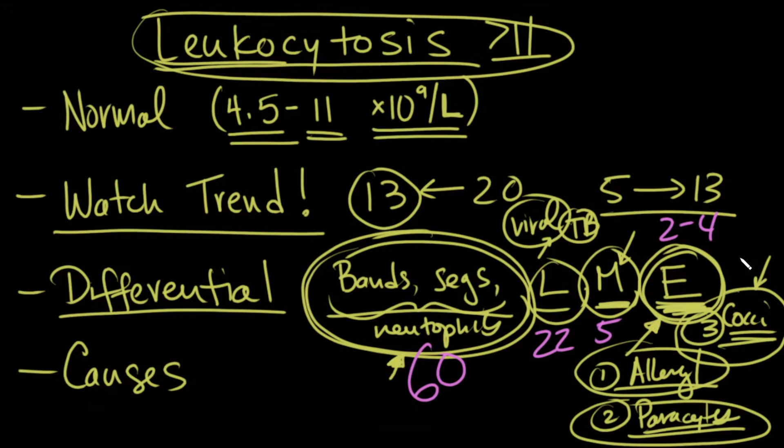If you see a deviation from that, then you know that there is a cell line that is increased. So if lymphocytes all of a sudden shoot up, think about viruses. If segments go from 60 to 80 or 90, think about a pyogenic or bacterial infection. If instead of 4%, you're at 20%, start thinking about coccy, allergy, or parasites.